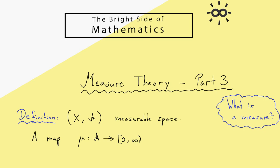Here in measure theory we change this a little bit: we also include infinity. This might look strange because we just include one new symbol. We have our positive real line including zero — that's normal — but we also include a new symbol and call it infinity. To shorten this notation we write that infinity is included in the interval, meaning we have this symbol infinity involved.